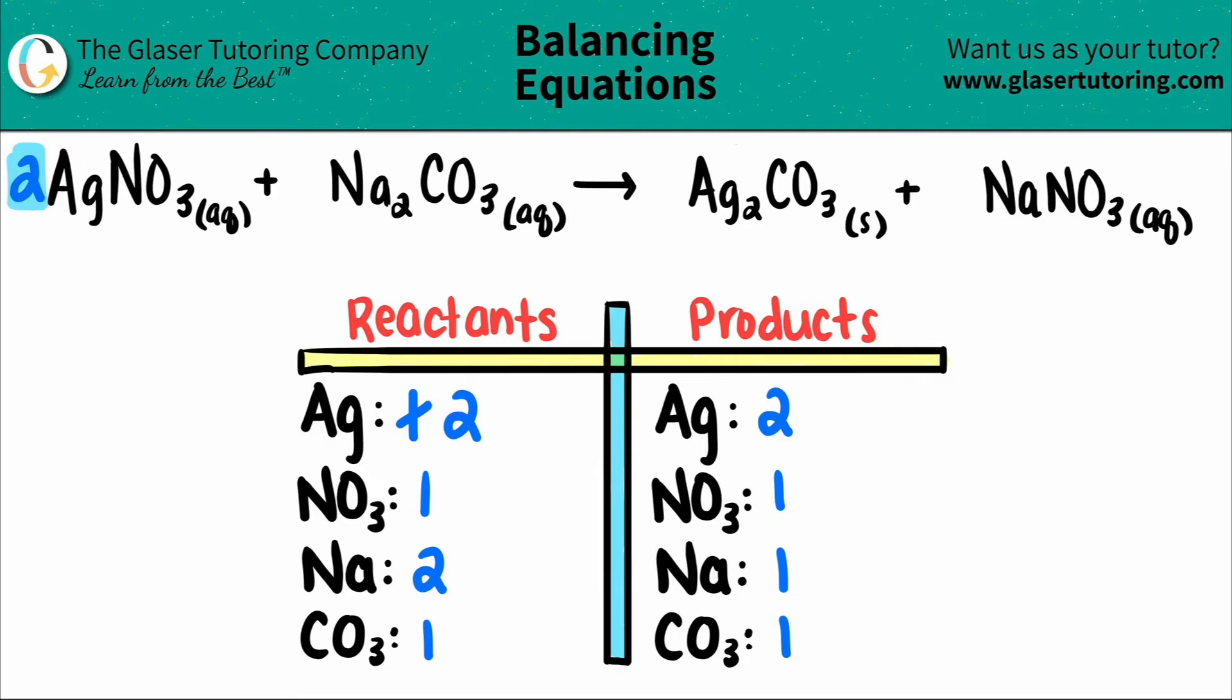So in this case, I have to distribute the two to the Ag and to the nitrate, the NO3. So I have two Ags, but now I have two nitrates. There was one nitrate. Now there's a total of two.